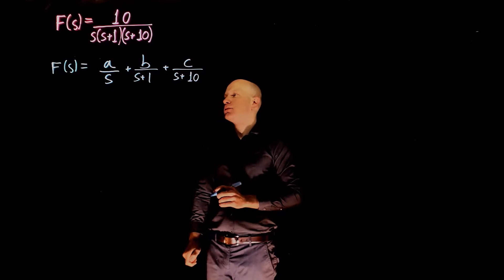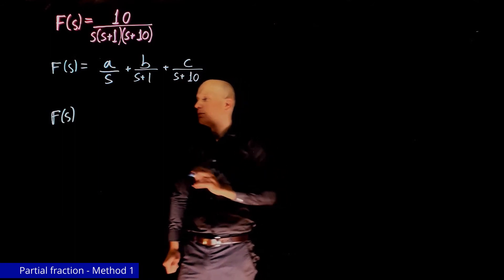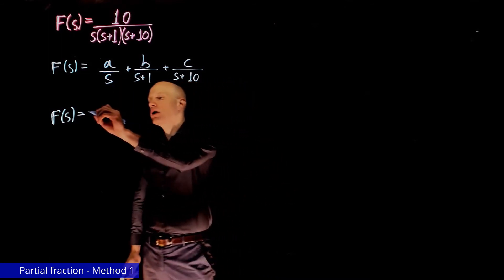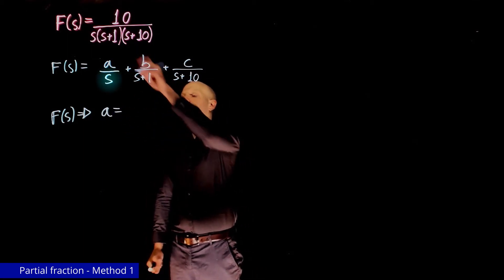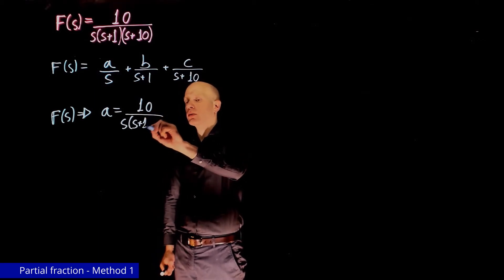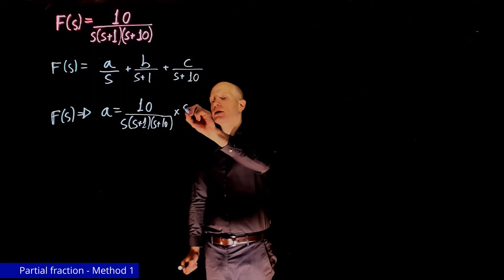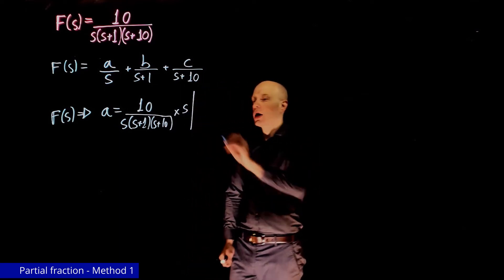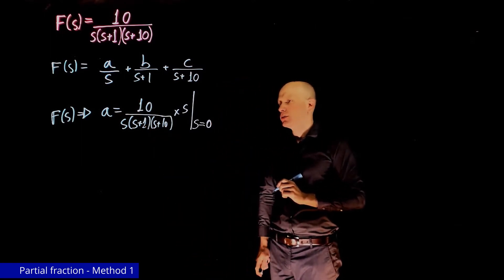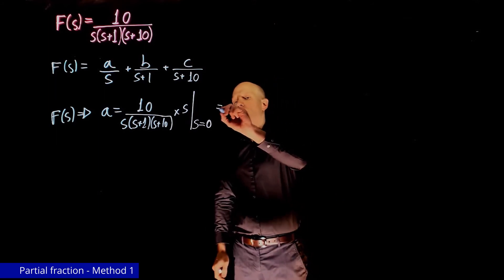The first method finds each component directly, one at a time. To find a, take the original expression, multiply by the denominator of a — that is s — and set s equal to 0, which makes that denominator zero. The s terms cancel, and when s equals 0, a equals 1.